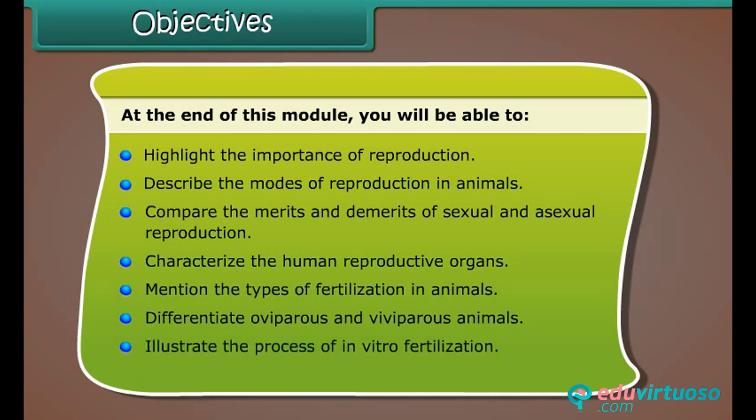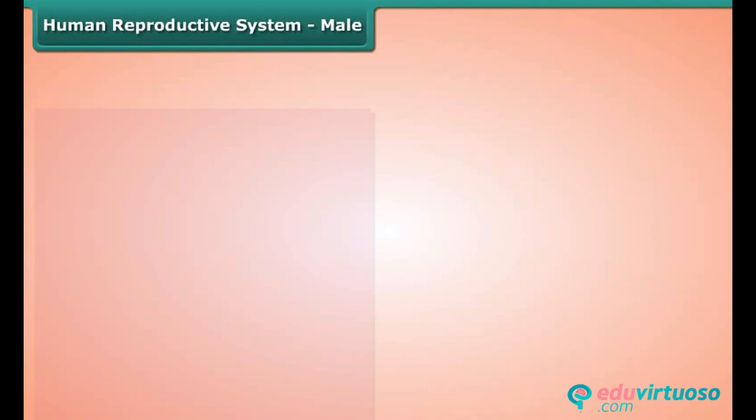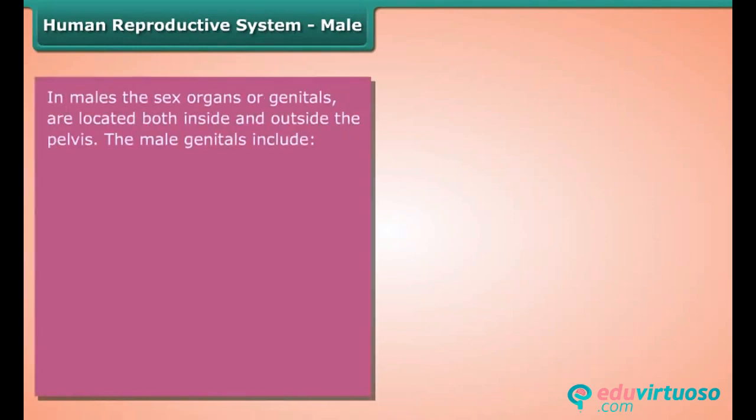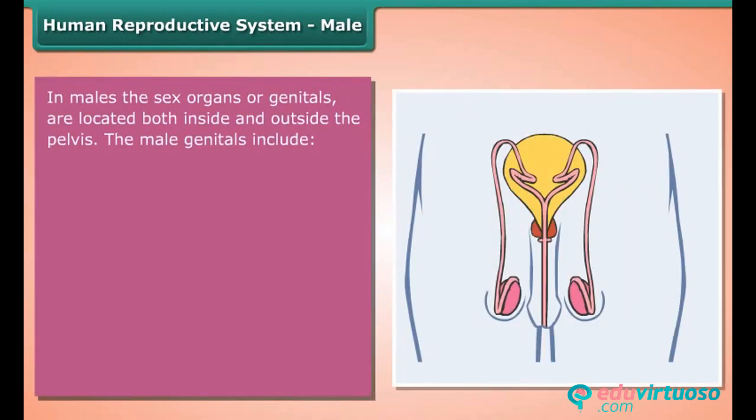You'll also be able to differentiate oviparous and viviparous animals, illustrate the process of in vitro fertilization, and explain the phenomenon of cloning.